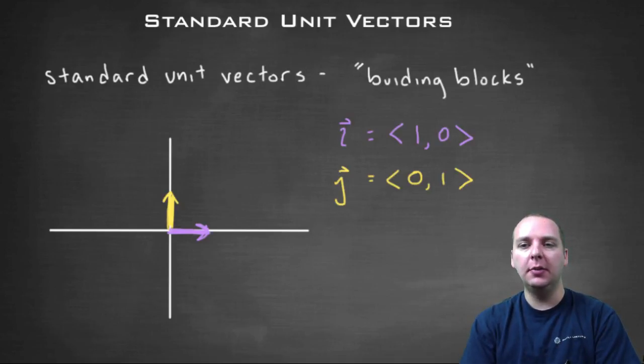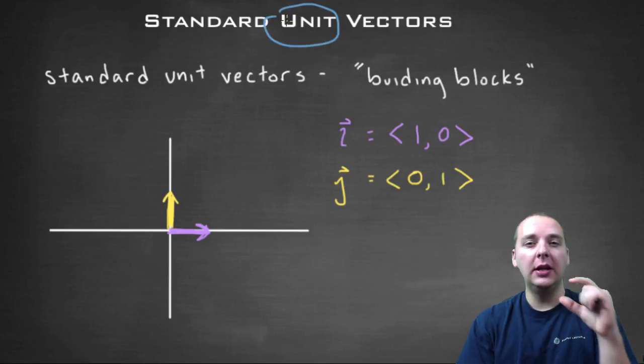Here are your basic building blocks. One is called vector i, and another is called vector j. i is the vector <1,0>, so it goes out one unit on the x-axis, and vector j goes out one unit on the y-axis. These are called unit vectors because they're only length one.